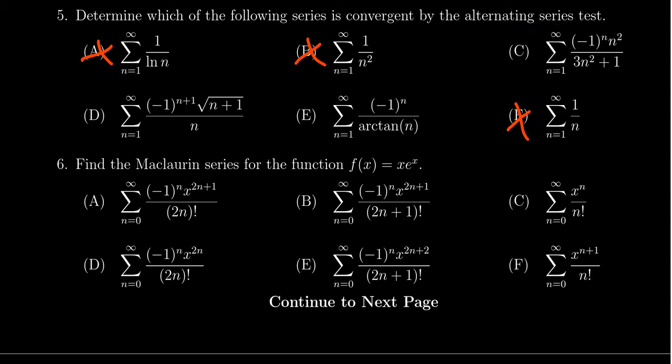Now for a series to be convergent by the alternating series test, it's necessary that if you ignore the negative 1 to the n, that that sequence decreases towards 0 eventually.